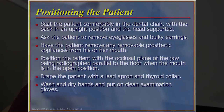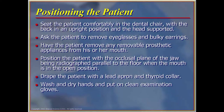Position the patient comfortably in the dental chair with the back in an upright position and the head supported properly. Ask the patient to remove eyeglasses and any bulky earrings, and have the patient remove any removable prosthesis that would affect the quality of the picture. Position the patient with the occlusal plane of the jaw being radiographed parallel to the floor when the mouth is in the open position. Always drape the patient with a lead apron and a thyroid collar, and wash and dry hands and put on clean examination gloves before proceeding.